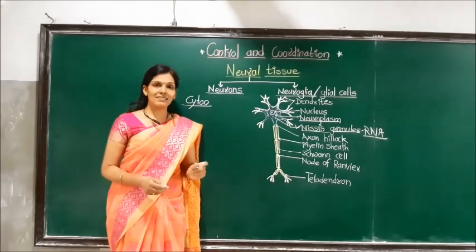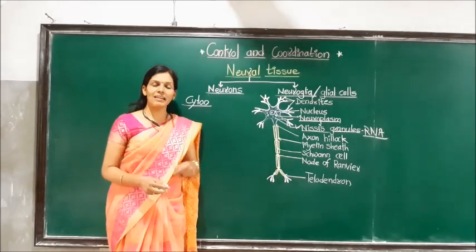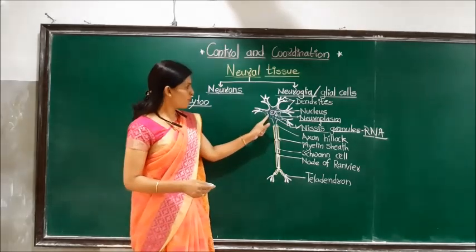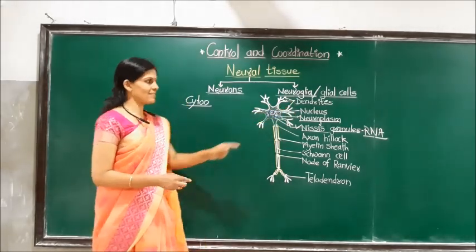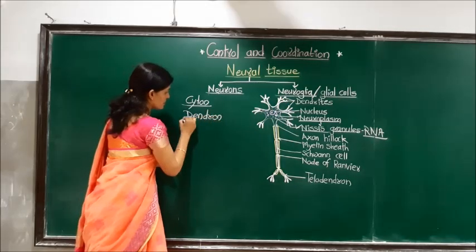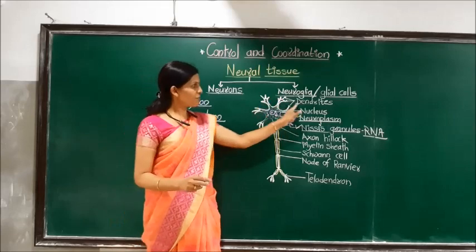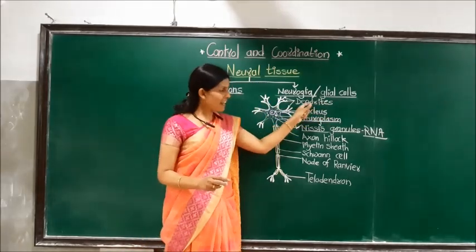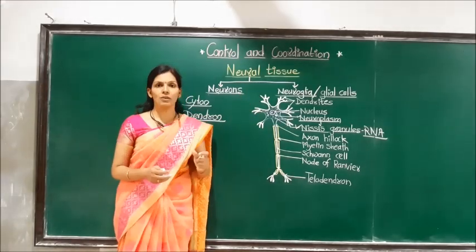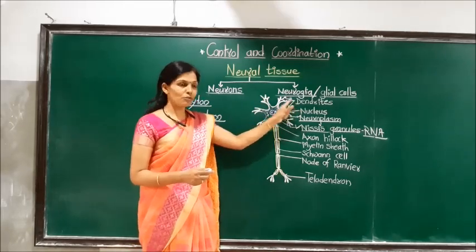Another cell component, neurofibrils, plays an important role in the transmission of nerve impulses. Moving on to the dendron — that is, dendrites — the dendron has smaller processes, which is why they are called dendrites. The function of dendrites is to collect impulses from another neuron or from sensory organs and carry the impulse to the cytone.